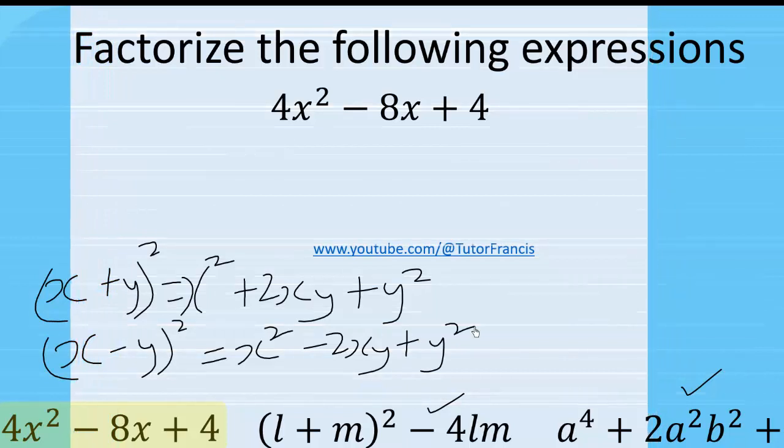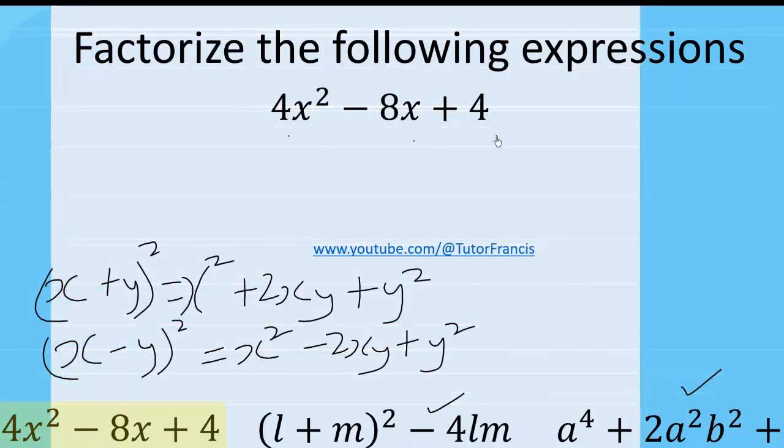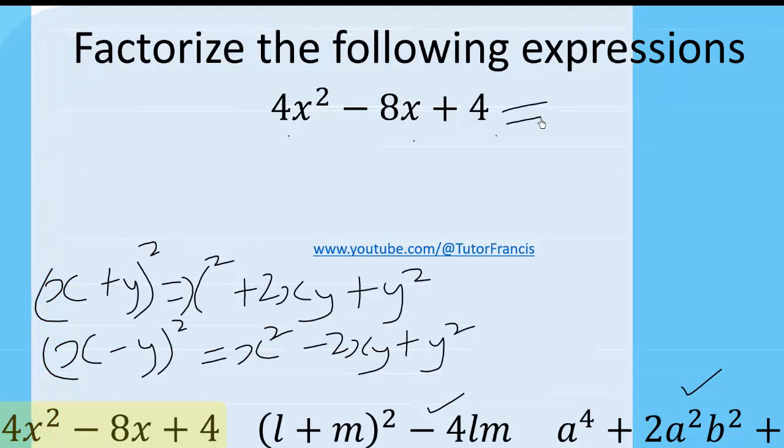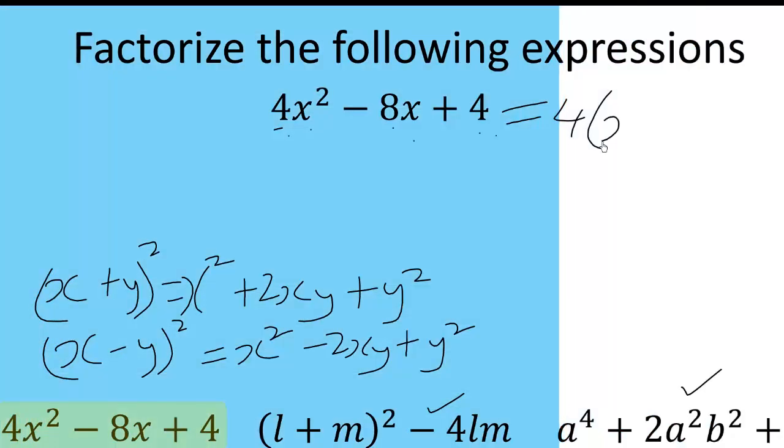So with 4x squared minus 8x plus 4, we can factor the highest common factor which is 4 out. We are left with x squared, then we are left with minus 2x here, then we are left with plus 1.